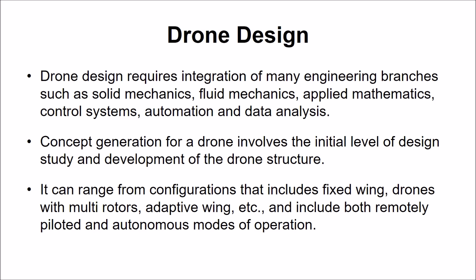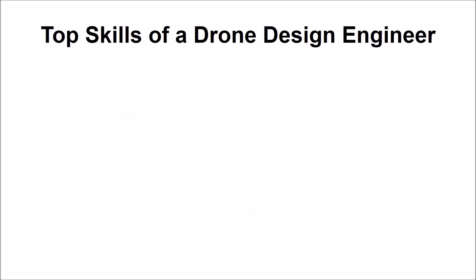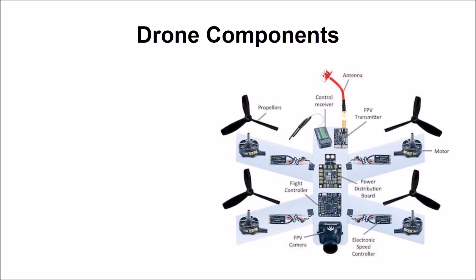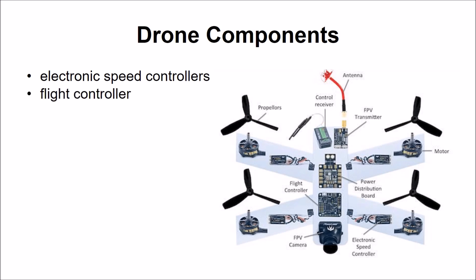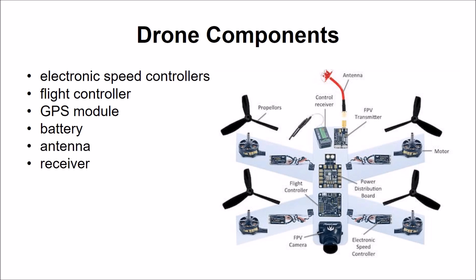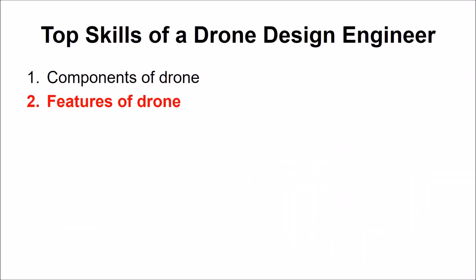Many of today's drones are capable of carrying some form of payload. Most drones also carry some sort of sensors, and relaying this sensor information to the ground is one of the primary purposes of drones. Drones have a large number of components including electronic speed controllers, flight controller, GPS module, battery, antenna, receiver, cameras, sensors, accelerometers, altimeters, and more. The type of each component to be used depends upon the purpose and desired capabilities of the drone.